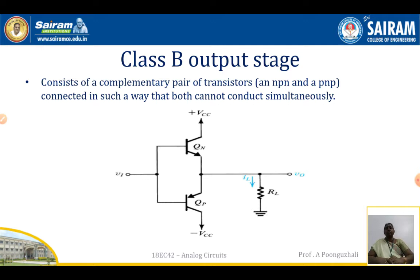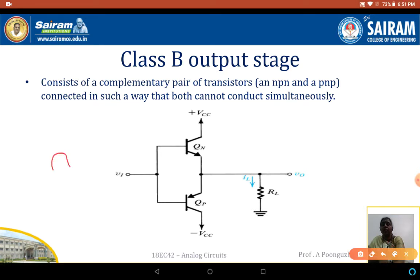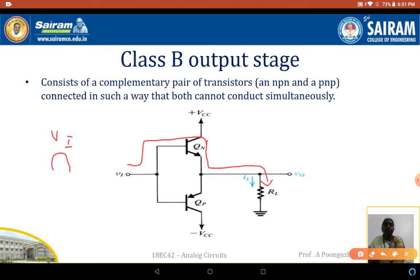The operation of the circuit during the positive half cycle: when the input signal VI is positive, the Q1 transistor (NPN) is going to conduct. When Q1 conducts, this NPN transistor is in the ON state, acting like a closed switch, and current flows through to the load resistance RL. So when VI is positive, Q1 conducts and acts as an emitter follower, with VCC appearing at the output.